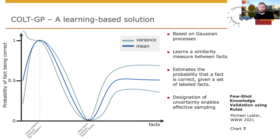Our second model is named COLD-GP as it is based on Gaussian processes. Unlike COLD-MC, it learns the similarity measure between individual facts and makes predictions on a scale from 0 to 1. Given a set of labeled facts, it learns to estimate the probability that a fact is correct or incorrect. A predicted value of 0 indicates that a fact is incorrect, while a value of 1 implies that a fact is correct. In addition to the prediction itself, the model also provides a quantification of its uncertainty in its predictions, which allows us to use efficient sampling strategies.